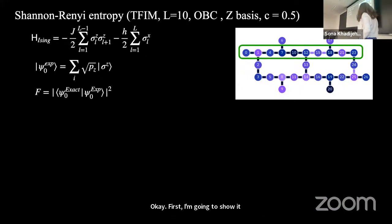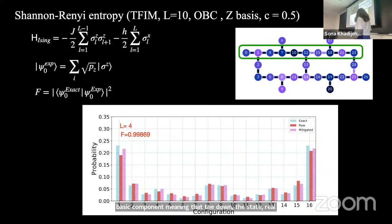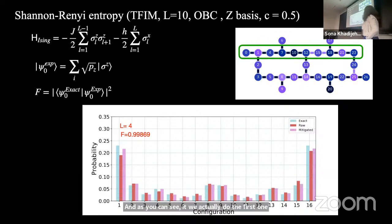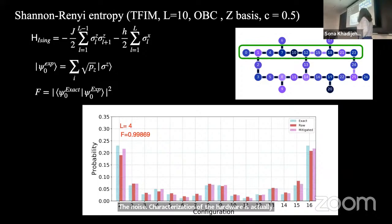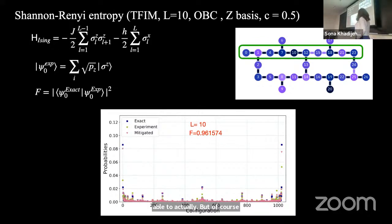Now I will show results for the transverse-field Ising model with open boundary conditions. Because this is a stoquastic Hamiltonian, the ground state is real and non-negative, so we can reconstruct the quantum state from the measured probabilities. The blue line is the exact value from exact diagonalization, the red is the raw experimental data before error mitigation, and after performing noise characterization and learning the noise of the hardware, our estimation of the probabilities improves significantly. Once we calculate the ground state from the mitigated values, for a system size of 4 we are almost able to prepare the ground state with 99% fidelity, though fidelity decreases with larger system size.